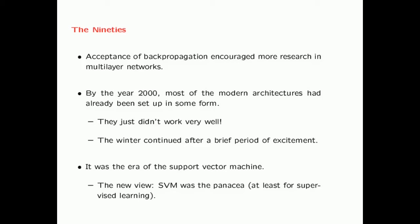Acceptance of backpropagation encouraged more research in the field of multilayer networks. In the 90s, there was sporadic research in the field of neural networks, and by the year 2000, most of the modern architectures we know today — such as convolutional neural networks, recurrent neural networks, and even long short-term memory — had already been set up in some form. However, these methods really didn't work very well. The winter of neural networks continued after a brief period of excitement. This was the era of the support vector machine.